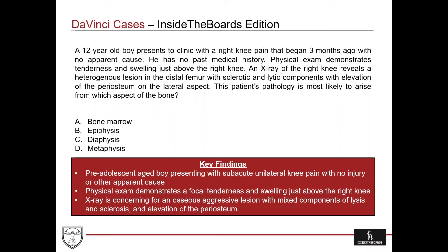Looking at the key findings here — and keeping in mind I am an OB-GYN, but also generally a doctor — the real test on USMLE, NBME shelf exams, and other standardized exams in medical education is to learn to think clinically. So what are the important points? We have a 12-year-old boy with a chief complaint of knee pain, a subacute time frame of three months, no identifiable trauma, no past medical history, and tenderness and swelling above the knee. Objective x-ray findings show a heterogeneous lesion in the distal femur with sclerotic and lytic components and elevation of the periosteum.